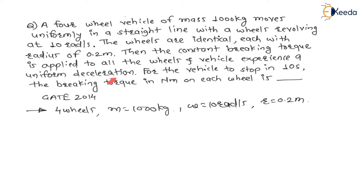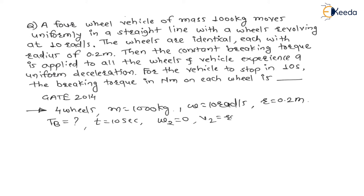A constant braking torque is applied to all the wheels and the vehicle experiences a uniform deceleration — that means a reduction in speed. The vehicle is to stop in 10 seconds, meaning the final angular velocity becomes 0, so the final velocity v2 = r·ω2 = 0. That means the vehicle stops.